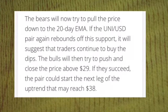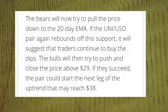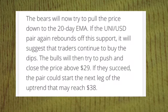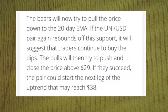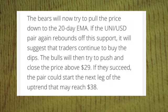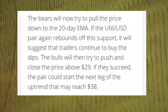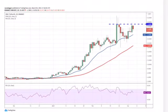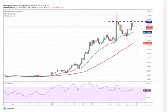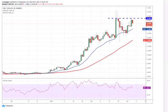Conversely, if the bears drive the price below the 20-day EMA, the pair could drop to $20 US dollar. Such a move may result in consolidation between $20 and $29 US dollar. The trend will turn negative on a break below the 50-day SMA at $18.85 US dollar.